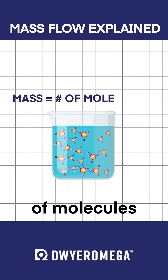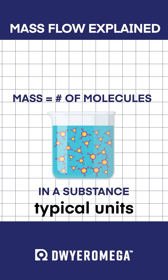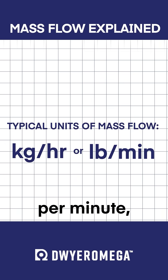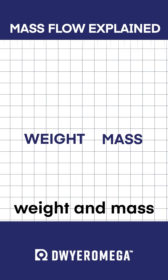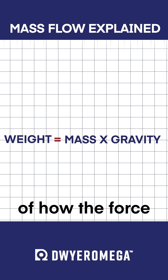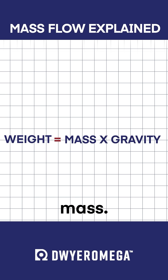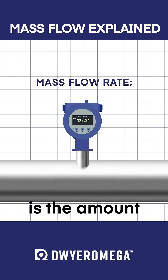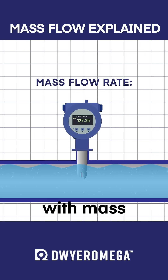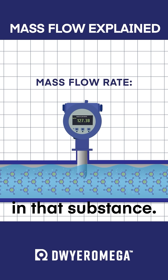Mass refers to the number of molecules found in a substance. And even though typical units of mass flow are kilograms per hour or pounds per minute, weight and mass are not the same thing, since weight is merely the measure of how the force of gravity acts upon an object's mass. Mass flow rate is the amount of mass moving through the flow meter per unit of time, with mass being represented by the number of molecules in that substance.